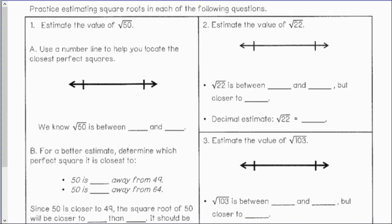Knowing my first 15 perfect squares really comes in handy. The square root of 50 is in between the square root of 49 and the next consecutive perfect square, the square root of 64. The square root of 49 is 7 and the square root of 64 is 8, so the square root of 50 is between 7 and 8.